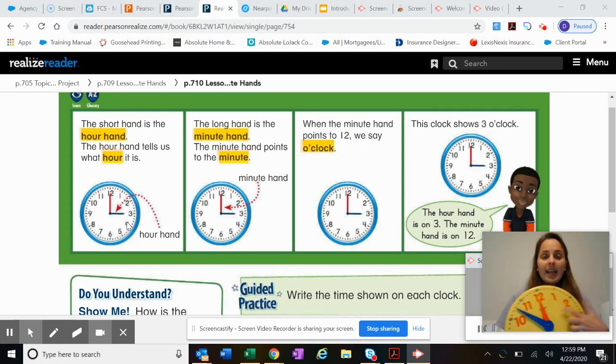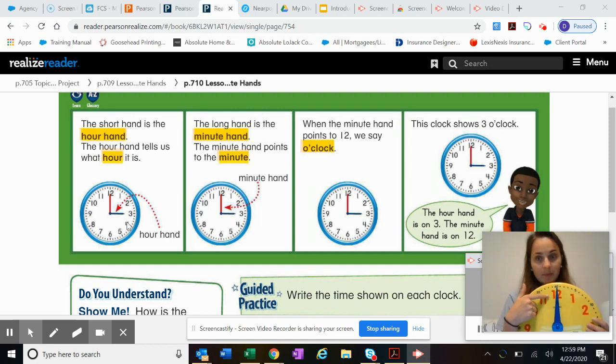The long hand is the minute hand. The minute hand points to the minute. So when the minute hand points to 12, we say o'clock. So like you've heard 1 o'clock, 2 o'clock, 3 o'clock, 4 o'clock, and so on.